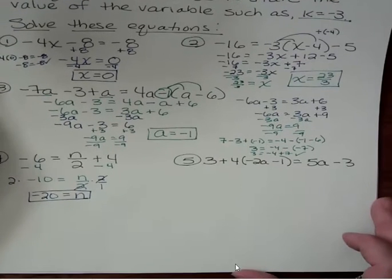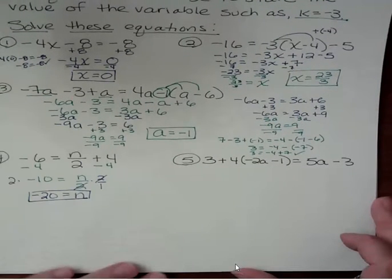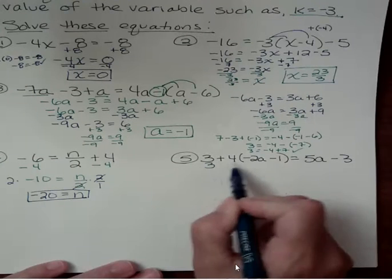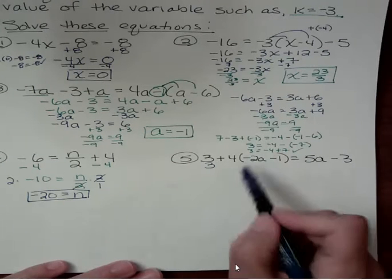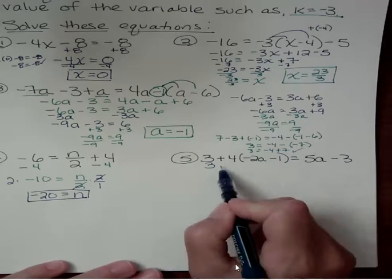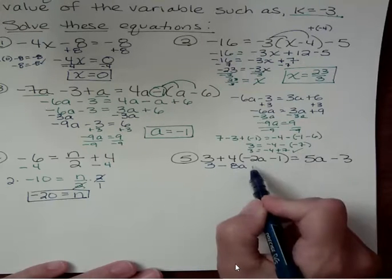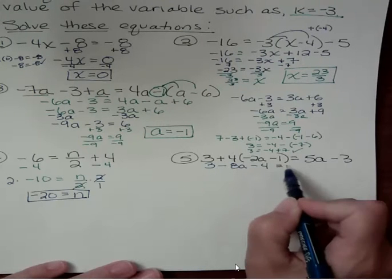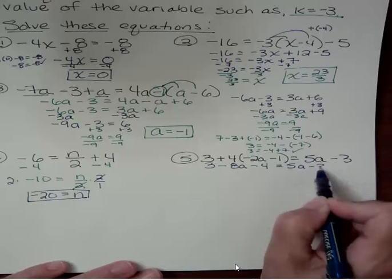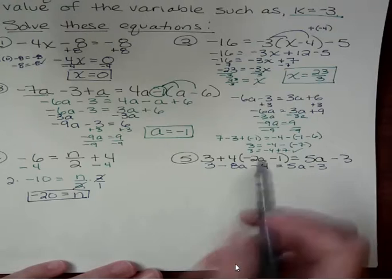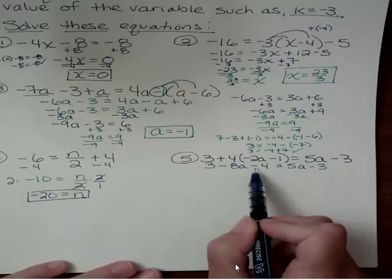And then the last one, I want to distribute to get rid of parentheses. So I have 3 that has nothing to do with that. Then 4 times negative 2a is negative 8a. 4 times negative 1 is negative 4. And this is not simplifiable on the right because they're not like terms. 1's an a and 1 doesn't have an a.